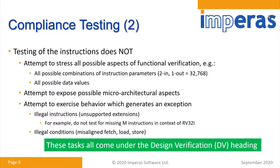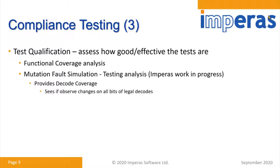The current compliance setup is not going for illegal instructions or unsupported things — it's only testing the known good results. If you want to go further than compliance, that's what DV is all about. One of the key challenges in the methodology is knowing how good your tests are. There are really two approaches: one is functional coverage, where you look at what instructions and values you're putting through your pipelines and designs. The other is whether that value propagates through to the output — done by fault simulation technologies with mutators — which provides decode coverage to see if an observed change in the decodes can be observed in the signature.